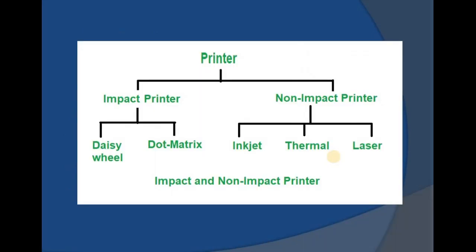Now let's discuss hard copy output devices. Hard copy output devices include printers, which can be categorized based on their working mechanism into impact printers and non-impact printers. Impact printers include dot matrix and daisy wheel printers. Non-impact printers include inkjet printers, laser printers, thermal printers, and so on.